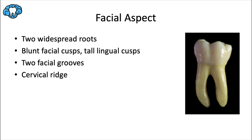Starting with the facial aspect, the first thing to point out are the two widespread roots — one mesial and one distal. Notice how the mesial root tends to curve more than the distal root does.